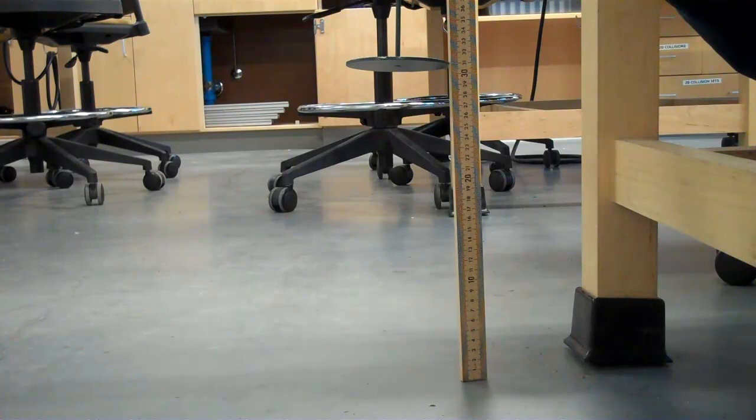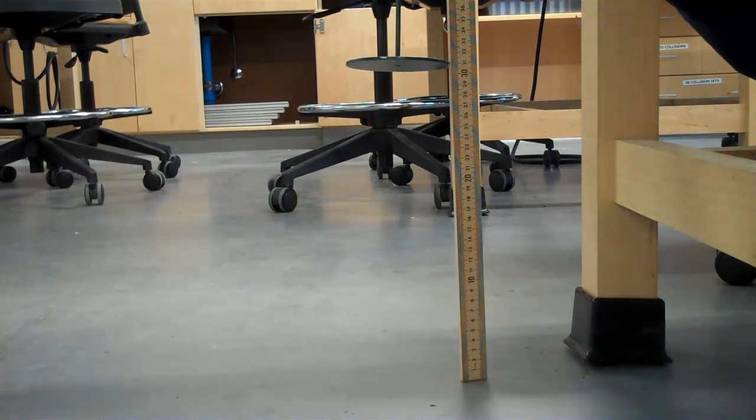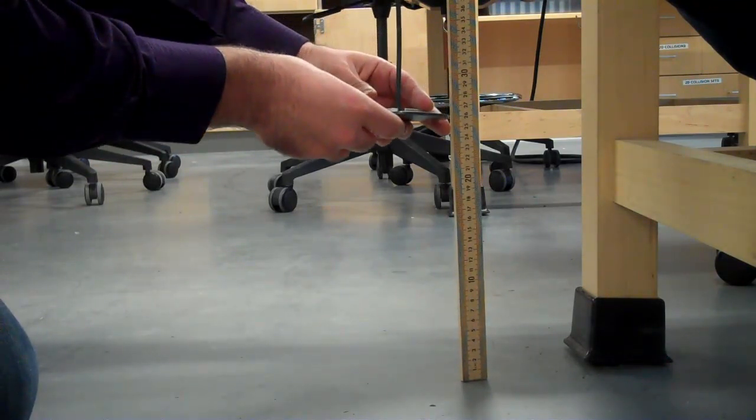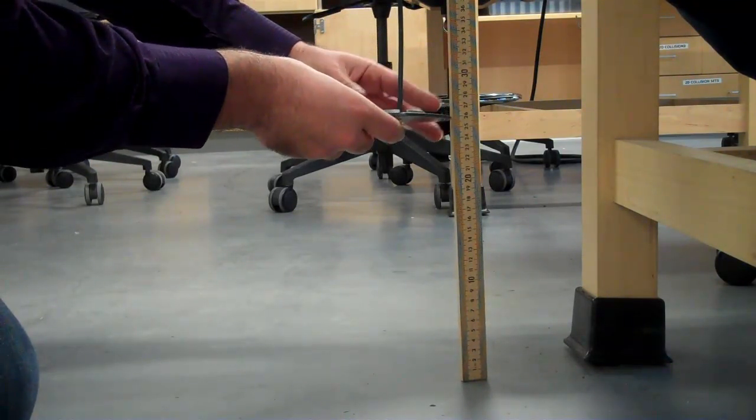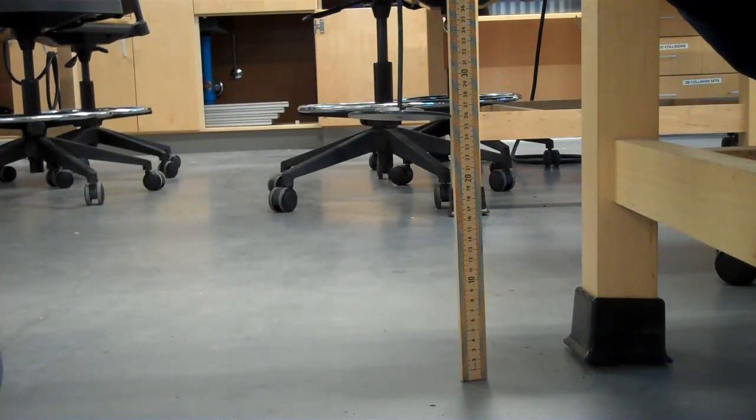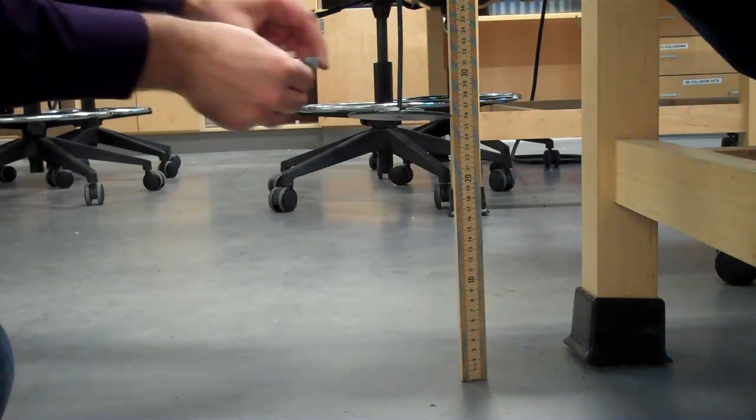So now we're going to add a weight, a 50 gram weight onto our hanger. And we'll get it stabilized here and it looks like it's about 25.8 cm off the ground with one weight.